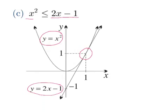So here, the solution is x is equal to 1. Okay, notice that the parabola is actually greater than or equal to the line at all points.